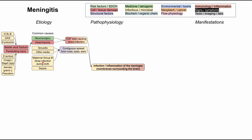Maternal group B strep infection can also cause meningitis. This bacteria typically colonizes the vaginal canal of a pregnant woman, and during birth the baby can catch group B strep, which can cause sepsis or nose, ears, and eye infections — potentially leading to meningitis. That type of sepsis and many others can cause hematogenous dissemination of bacteria into the meninges. It's also possible that bacteria or viruses do retrograde transport along nerves, working their way back up to the central nervous system and causing meningitis that way.